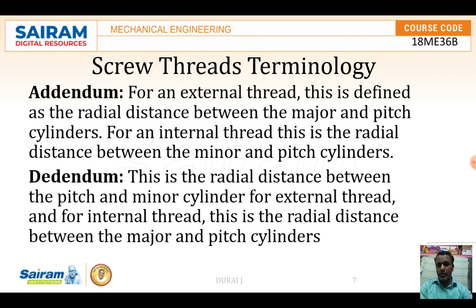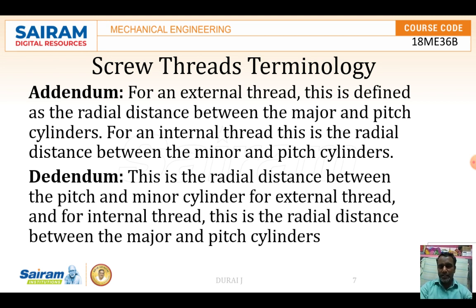Then comes the addendum and dedendum. For an external thread, the addendum is the radial distance between the major and the pitch cylinder. For an internal thread, it is the radial distance between the minor and pitch cylinder. For dedendum, it is the radial distance between the pitch and minor cylinder for an external thread, and the radial distance between the major and pitch cylinder for an internal thread.